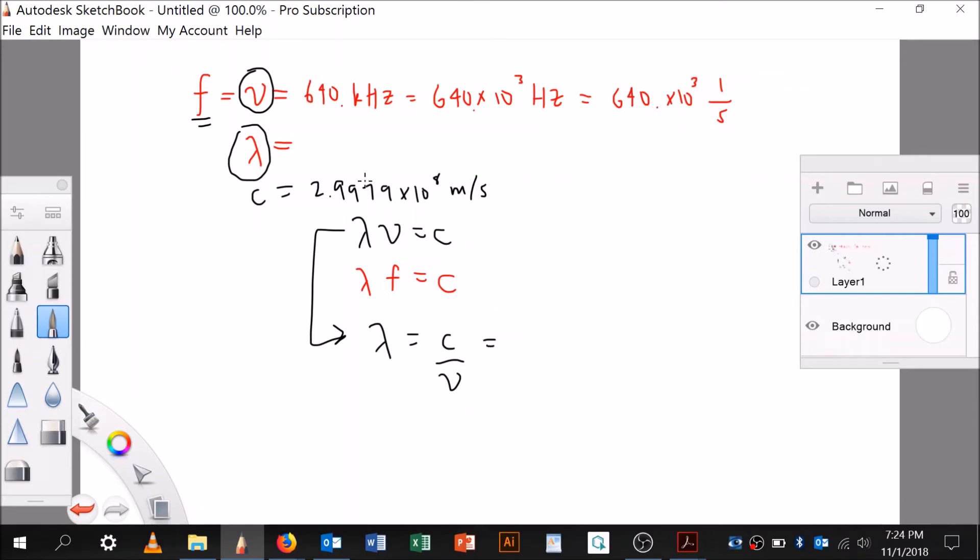All right, if that's the case now, we're ready to calculate this. We have both nu, which is this, and C, which is this, right? Okay, so let's do it. 2.9979 times 10 to the 8th meters per second, divided by 640 times 10 to the 3 reciprocal seconds. Can you see now that these two cross off? That crosses off, and I'm left with meters.